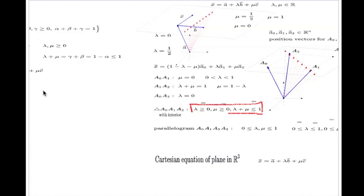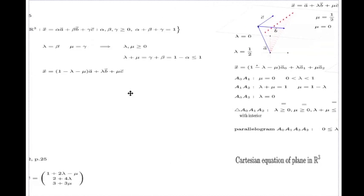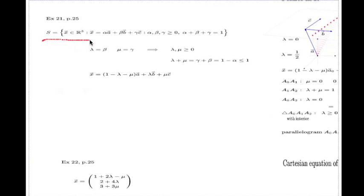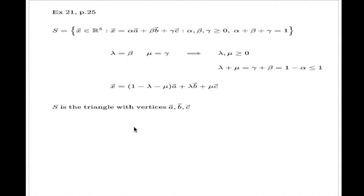And so my final answer to the question will be that this set S is the triangle with vertices A, B, and C. All I did, I just reduced this look of this set to the look we discussed with you at length just now.